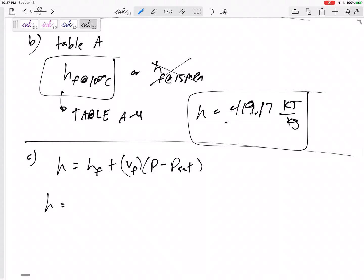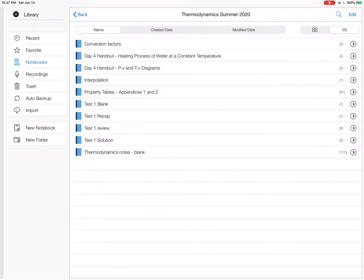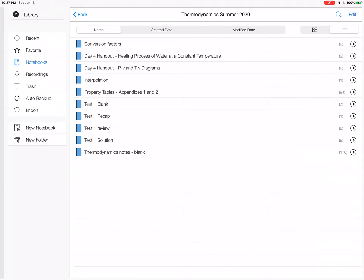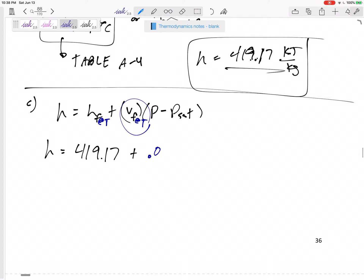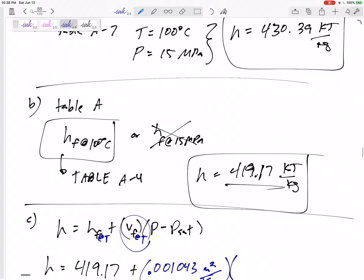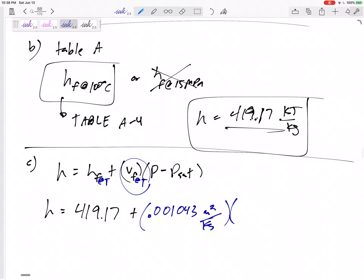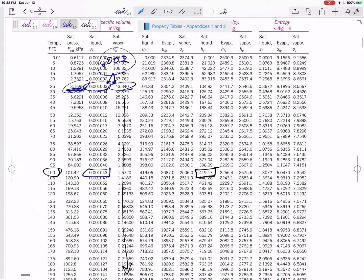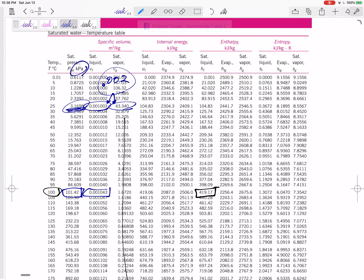Well, we'd say, okay, let me take that 419.17 and let me correct it. So this is at the temperature, the V at that temperature that was on the property table, 0.001043. Very small, a very small value. Maybe this doesn't correct it very much. 0.001043 meters cubed per kilogram. And times the P that we're at, 15 MPa minus P sat. What is P sat at that temperature? At the temperature 100 degrees C, the P sat is 101 kPa.